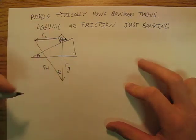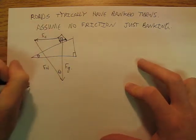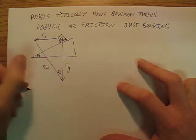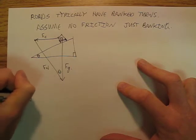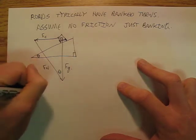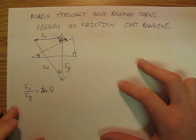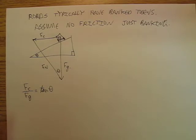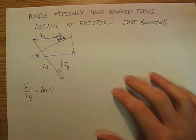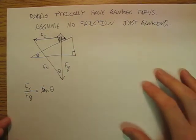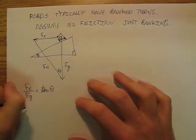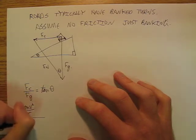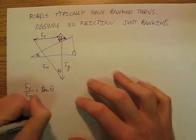And so we're going to have this relationship where force centripetal divided by force gravity is going to be equal to tangent theta. So now, if we figured out that we had, so then we can also just sort of mv squared over r divided by mg is equal to tan theta.